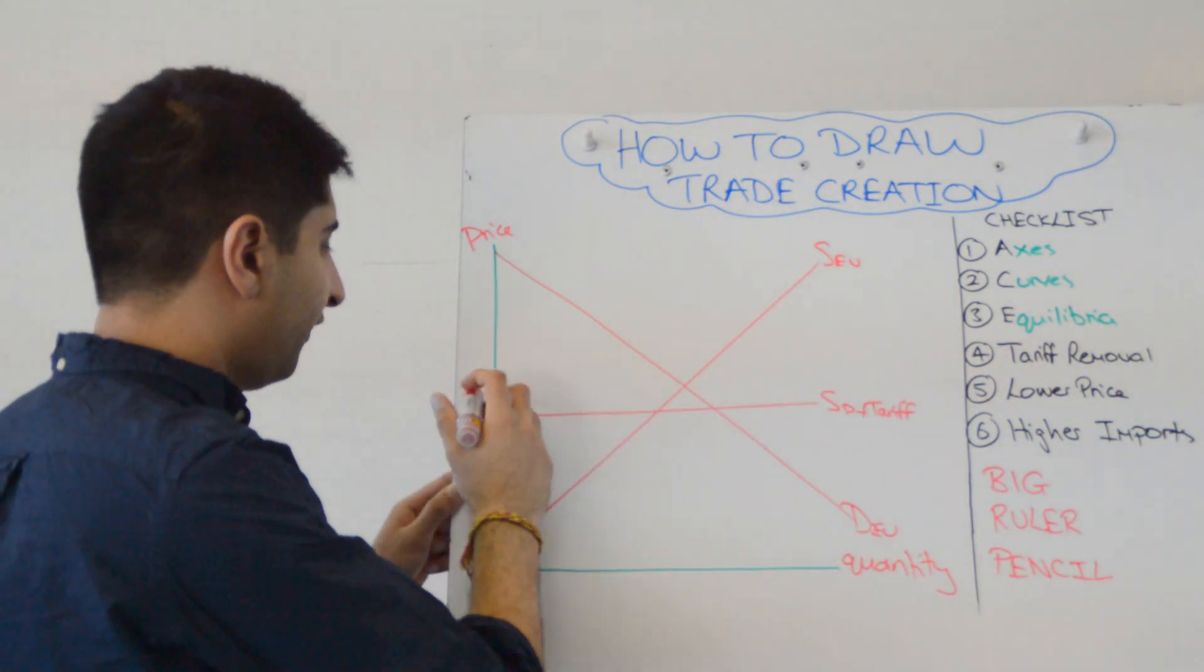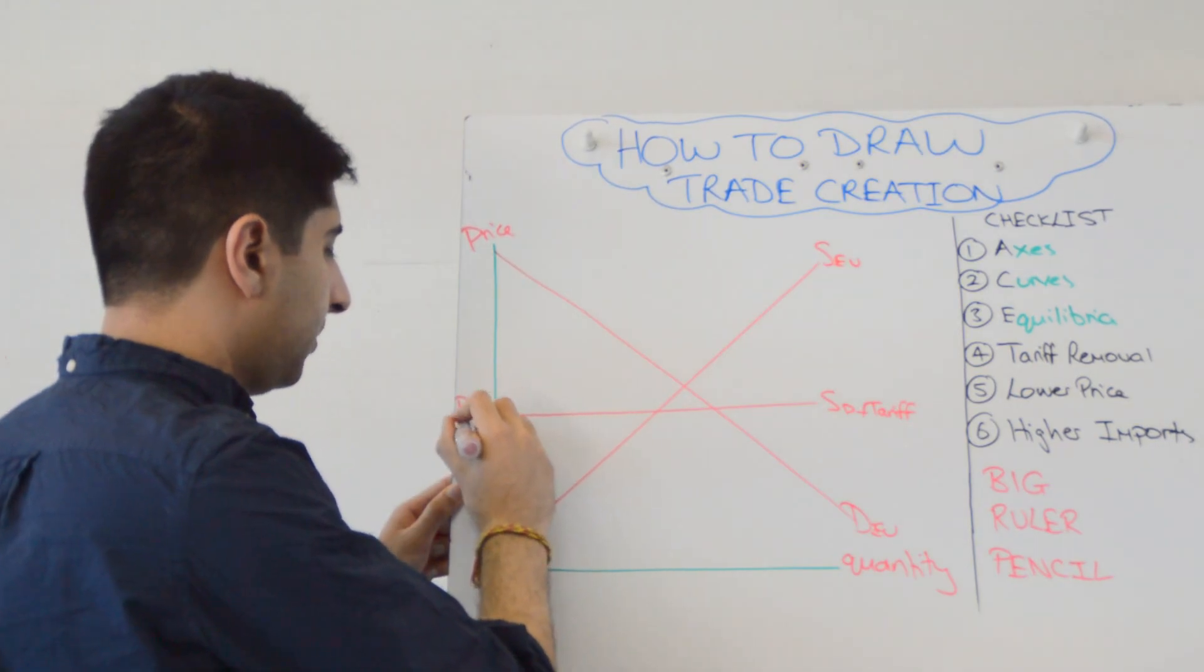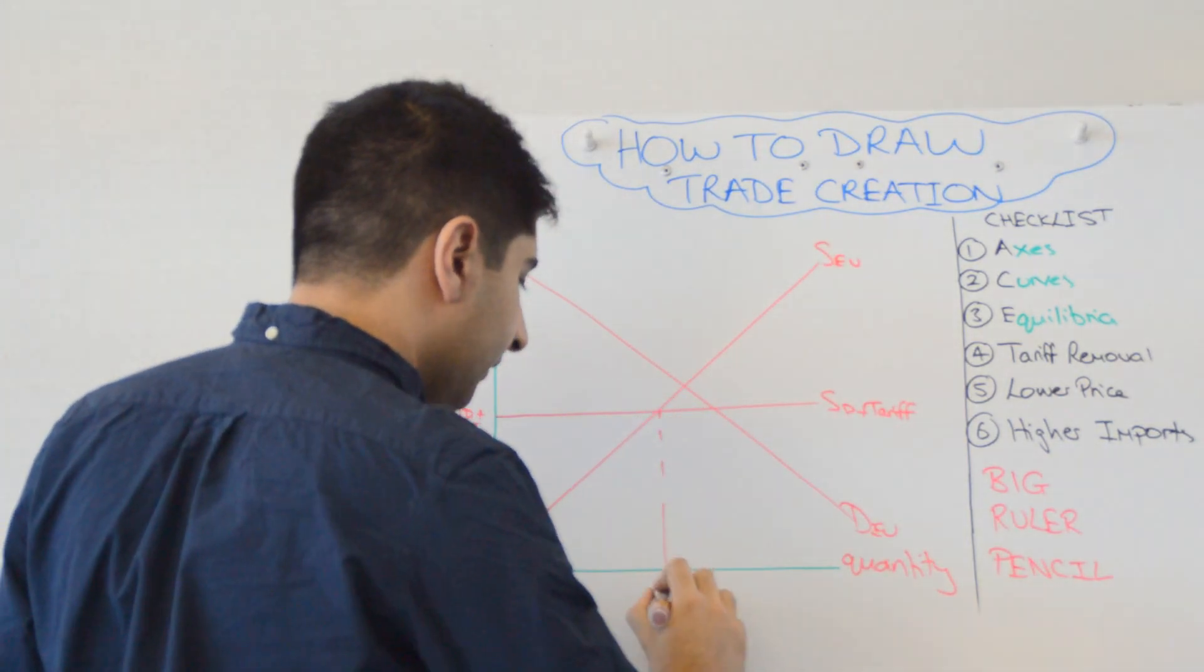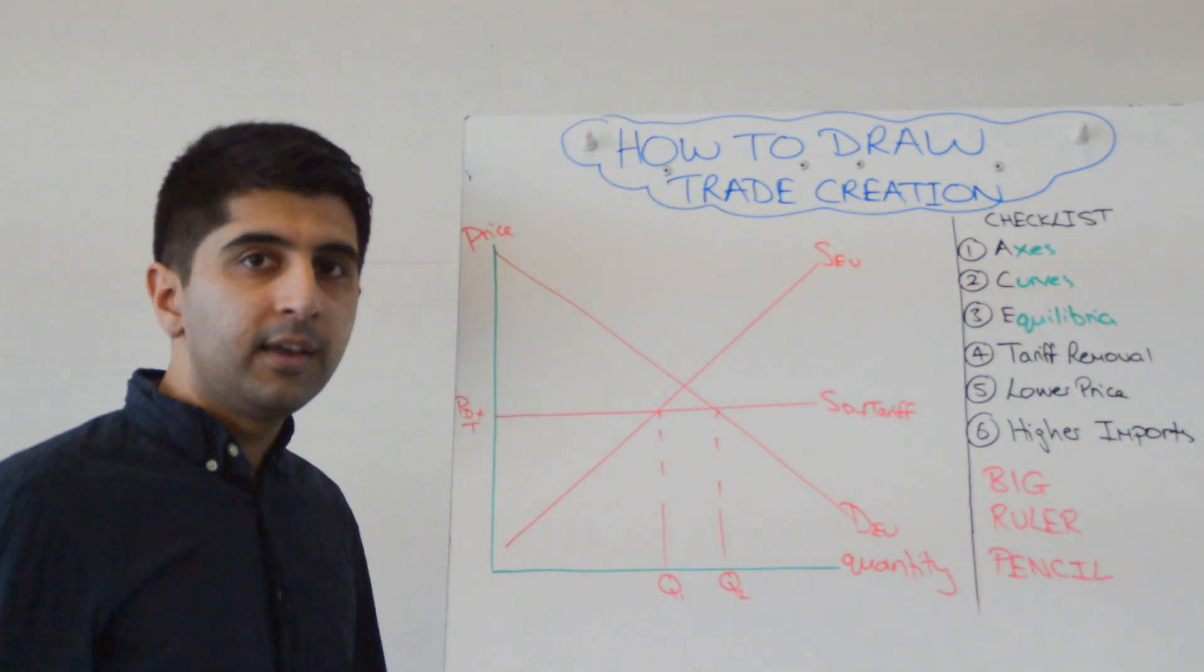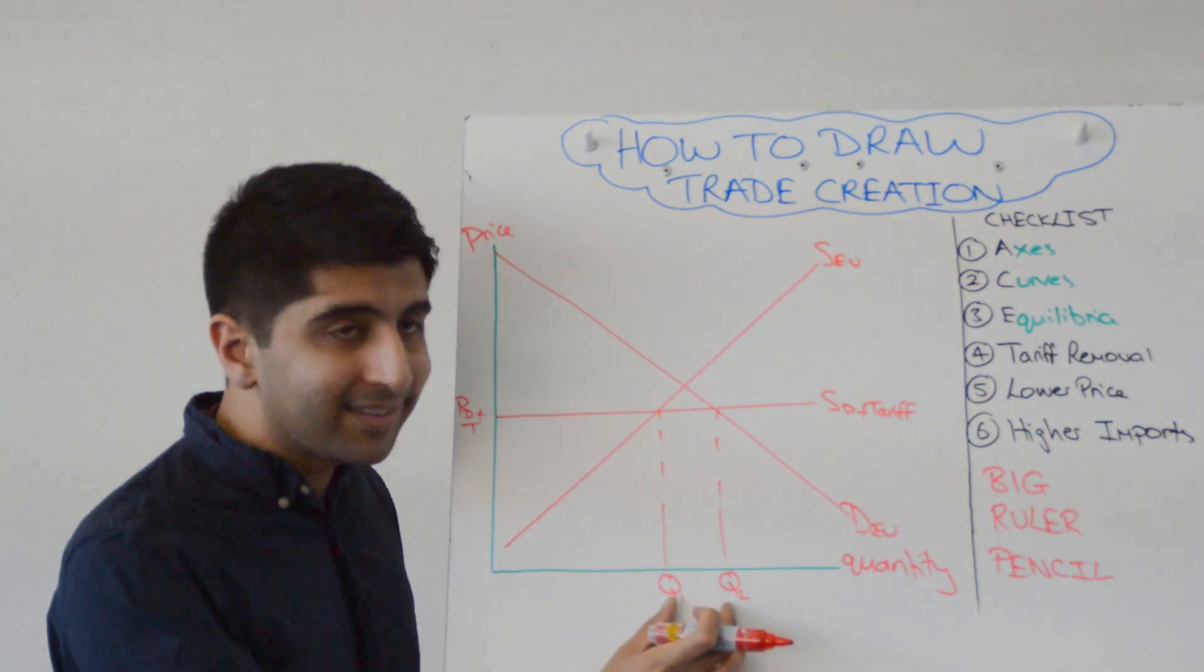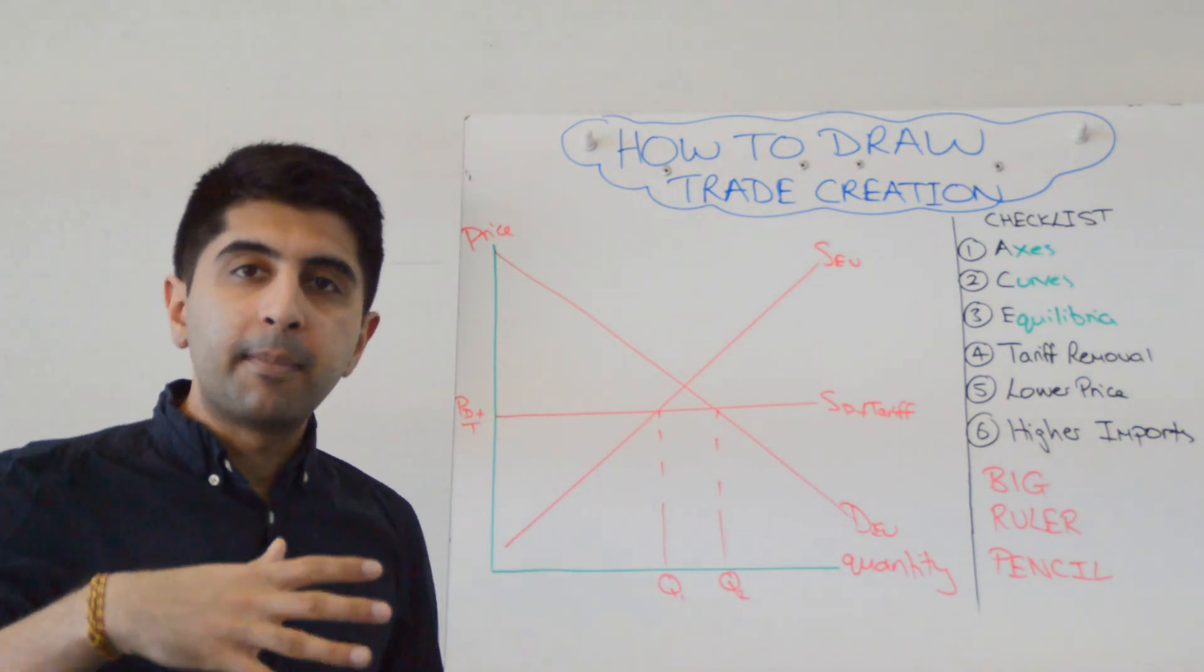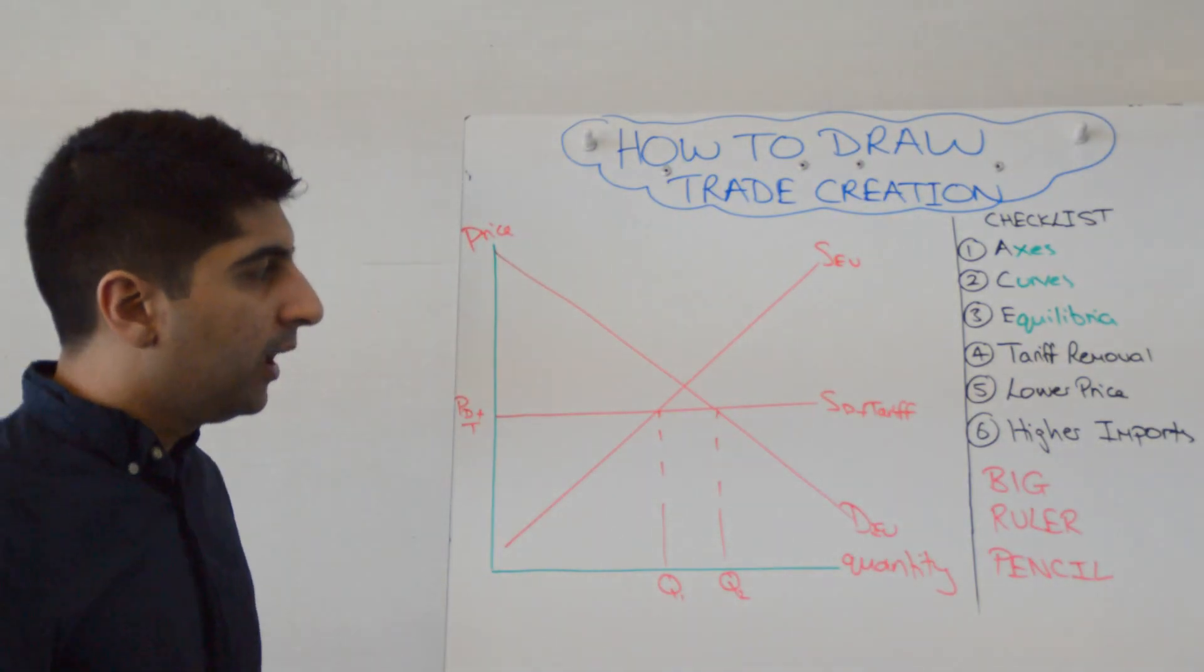The price reflects this supply curve. So we'll call that PD plus T. And at that price, domestic EU supply is at Q1. Domestic EU demand is at Q2. And the excess is satisfied by imports coming in from this domestic country outside the EU, but with this common external tariff on top.